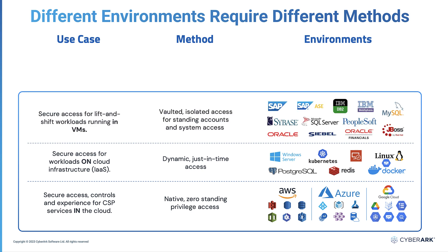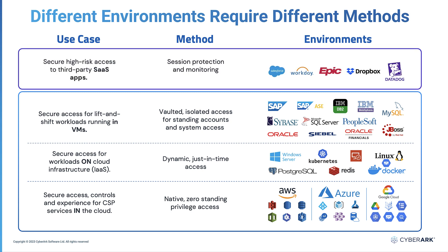Third are the lift-and-shift applications running in a VM on the cloud, usually running different applications that each has its own security model. Therefore, in this case, access will be using local users, and since such applications can be critical to the organization, access needs to be isolated and credentials should be vaulted. And last but not least, every organization uses sensitive third-party sales applications, business or technical applications, and any access to such applications needs to be protected and monitored.